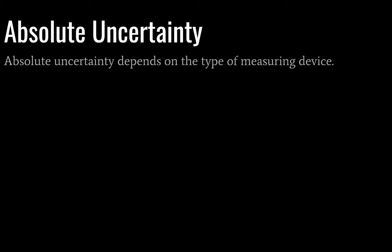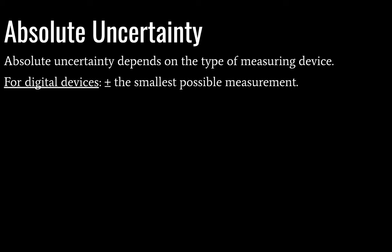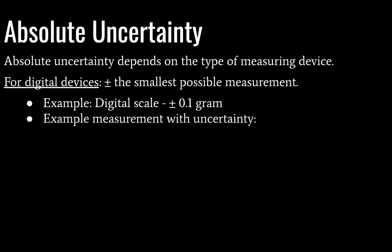Let's look at absolute uncertainty. This is going to depend on the type of measuring device. If you have a digital device, your absolute uncertainty will be plus or minus the smallest possible measurement. The example we used earlier — a digital scale — will have an uncertainty of plus or minus 0.1 grams. So an example measurement from a digital scale would be 10.2 ± 0.1 grams. You can see the number of decimal places on the measurement matches the number of decimal places of the uncertainty — one decimal place.